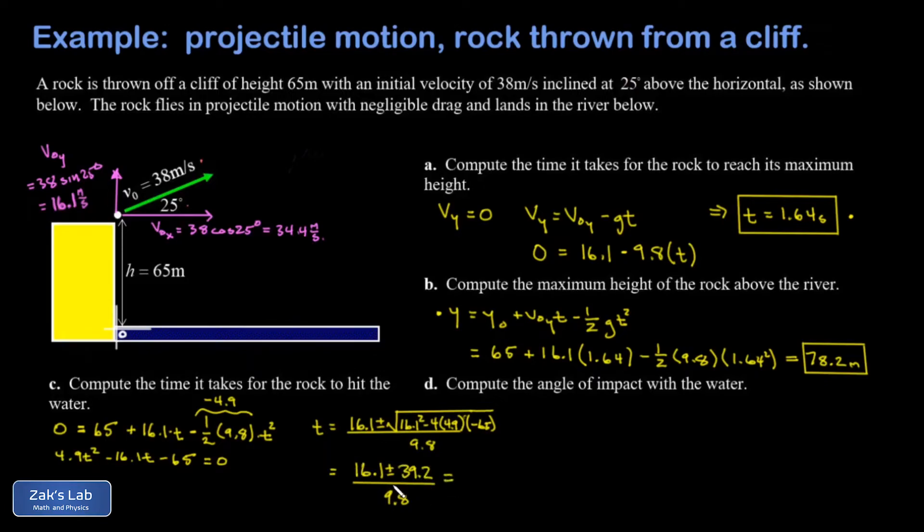And I can see that if I pick the minus solution that would make the numerator negative and I would get a negative time. We're throwing that solution out. I only keep the one that's positive. So I take 16.1 plus 39.2 and divide by 9.8. This gives me about 5.64 seconds.